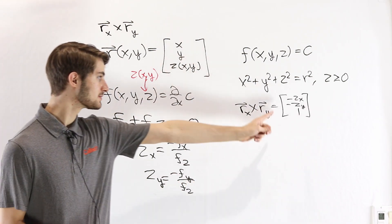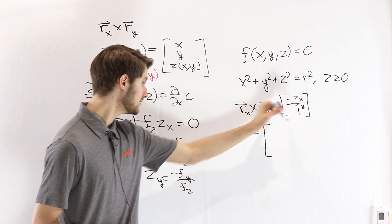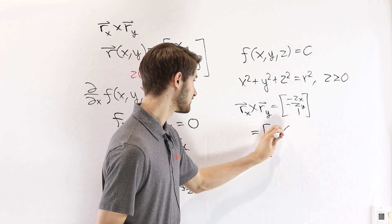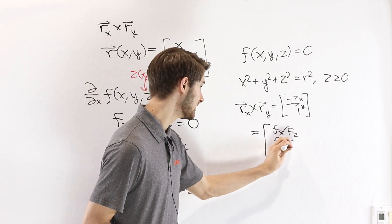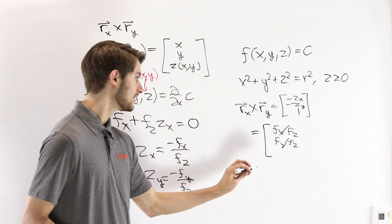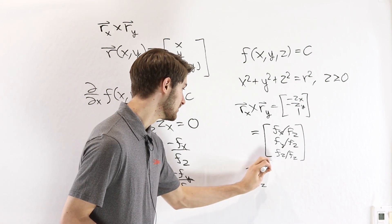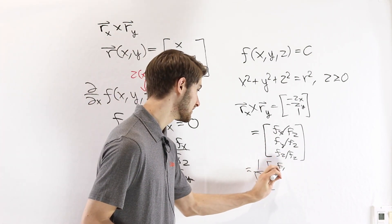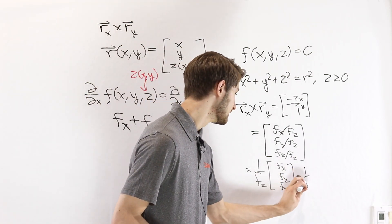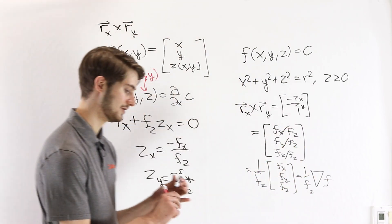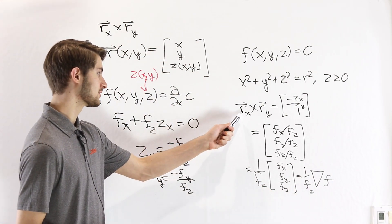We can plug these into the cross product formula. Negative z_x becomes f_x / f_z (the two negatives cancel), negative z_y becomes f_y / f_z, and we write 1 as f_z / f_z. Factoring out 1 / f_z from the entire vector leaves us with (f_x, f_y, f_z), which is exactly the gradient of f. So r_x cross r_y equals (1 / f_z) times the gradient of f.